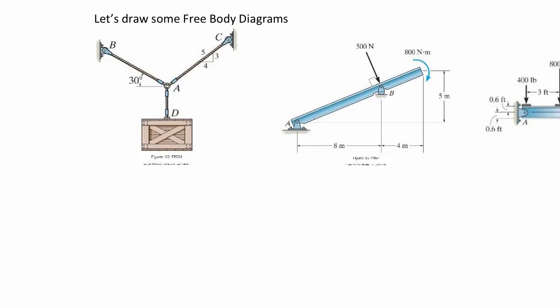Let's practice drawing some free body diagrams. Here's the one from Chapter 3 — we've already done this multiple times. Make sure you draw a complete free body diagram with the angles. I also like to draw the components — for example, this would be AC cosθ, this one is AB cos30, and there are also sine components. Putting the components on the picture really helps so I can follow what you're doing easily.